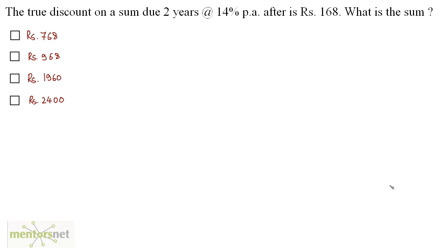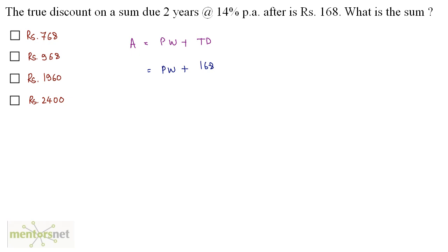The true discount on a sum due 2 years at the rate 14% per annum is 168 rupees. What is this sum? The sum is the future worth, which is also called the amount. Amount equals the principal worth plus the true discount, which is the interest on the principal. We have been given the true discount as 168, so the amount is principal plus 168. We need to find the principal from the true discount formula.